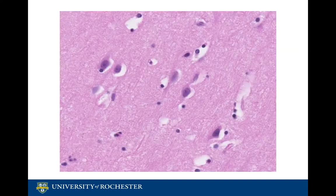The next cell type is the oligodendroglial cell. These cells are found in both white and gray matter and can be seen as having a fried egg appearance with cleared-out cytoplasm. The cells form the myelin layer in the central nervous system, wrapping around several axons.